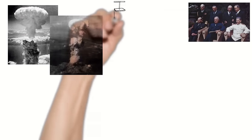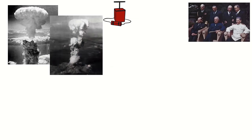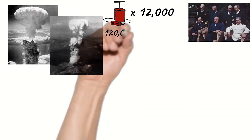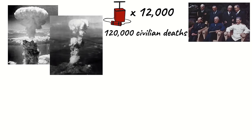You will remember that on the second day of the Potsdam Conference the USA dropped the first atomic bomb on Nagasaki in Japan. Then three days later they dropped a second on the city of Hiroshima. The bomb had the power of 12,000 tons of TNT and killed over 120,000 Japanese civilians.